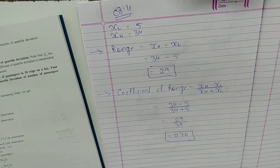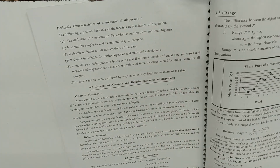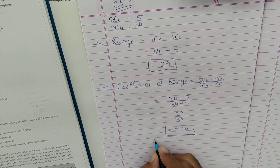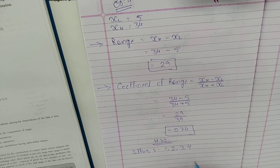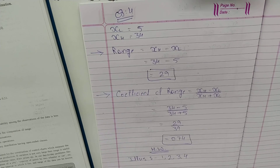So यह है coefficient of range. Sum number 4 हमने complete किया और साथ में exercise 4.1 भी complete हो गई. Now few homework — आज के homework में मैं आपको दे रहा हूँ illustration 1, 2, 3 & 4. Book में करना है same इसी topic के illustrations — range calculate करना है. तो यह lecture यहीं पूरा कर रहा हूँ. Next lecture में हम मिलेंगे और continue करेंगे exercise 4.2.